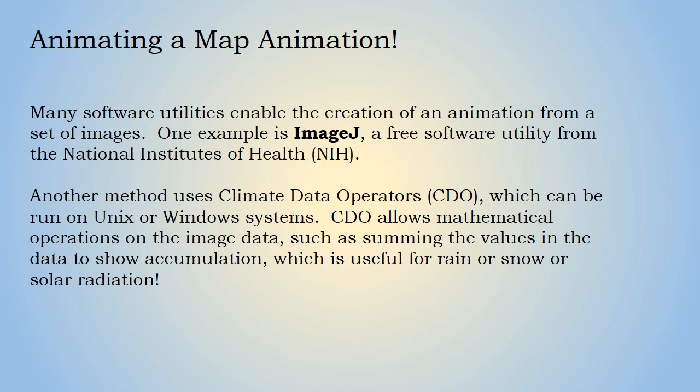Many software utilities enable the creation of an animation from a set of images. One example is ImageJ, a free software utility from the National Institutes of Health. With a small number of frames, it can also be done online on some sites. Another method uses Climate Data Operators (CDO), which can be run on Unix or Windows systems. CDO allows mathematical operations on the image data, such as summing the values to show accumulation, which is useful for rain, snow, or solar radiation.